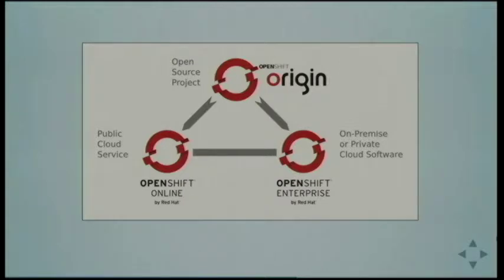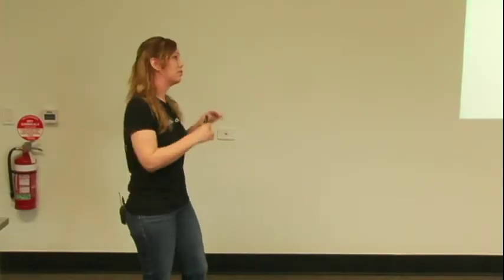That open source project feeds into two other products. OpenShift Online is a hosted public cloud service — go to OpenShift.com and that's what you'll get. It has more than two million apps deployed. There's a free tier where you get three containers or gears to run apps for free, each with a gig of storage and 512 megabytes of RAM. And for big companies wanting Red Hat support, there's OpenShift Enterprise.